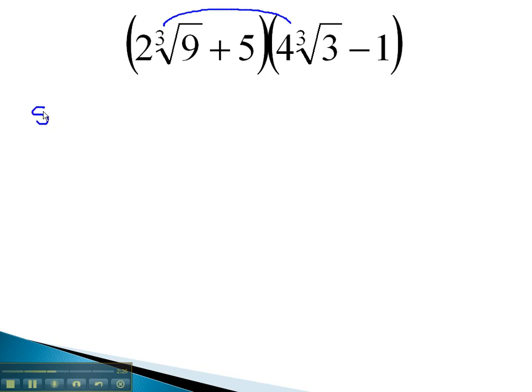2 times 4 is 8, and under the cube root, we have 9 times 3, or 27. 2 cubed root of 9, times negative 1, is negative 2, times the cube root of 9.